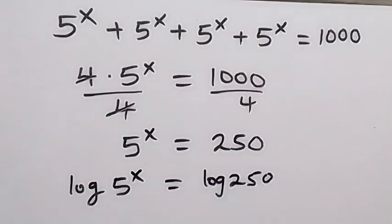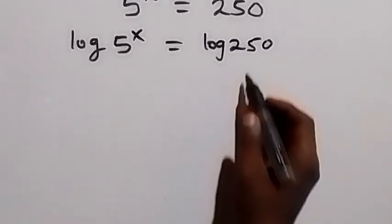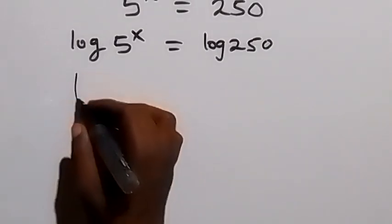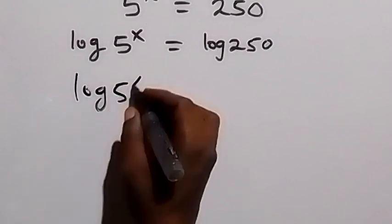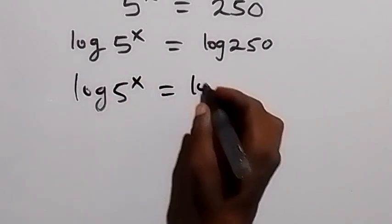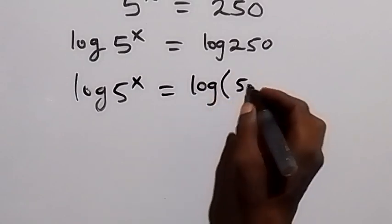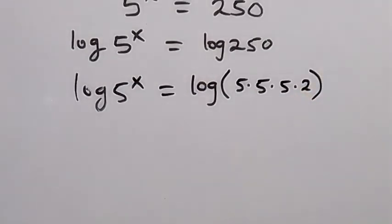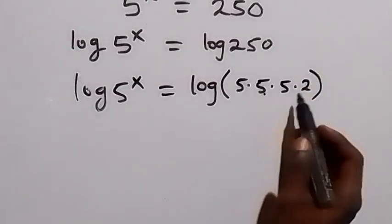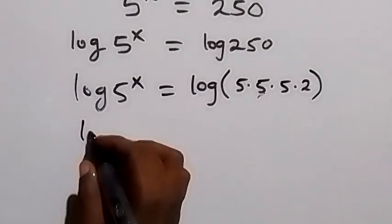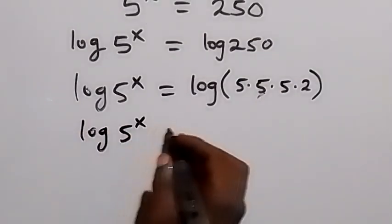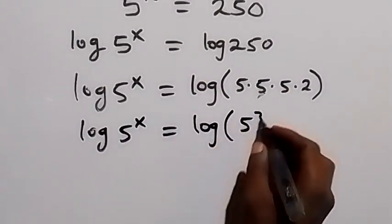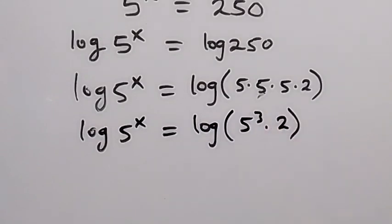In the next step, let's split 250 as 5 times 5 times 5 times 2. So we have log 5 raised to power x equals log of 5 times 5 times 5 times 2, which we can write as 5 raised to power 3. So this will be log 5 raised to power x equals log of bracket 5 raised to power 3 times 2.